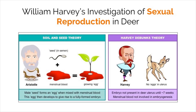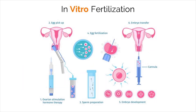One of the earliest theories as to how animals reproduce sexually was the soil and seed theory proposed by Aristotle. According to this theory, the male produces a seed which forms an egg when mixed with menstrual blood. This was a popular theory for many years until it was debunked by William Harvey. Harvey tested this theory by killing and inspecting female deer in an effort to find a developing embryo within the menstrual blood. He was unable to detect an embryo until about six to seven weeks after mating had occurred, thus concluding that the menstrual blood did not play a role in sexual reproduction.